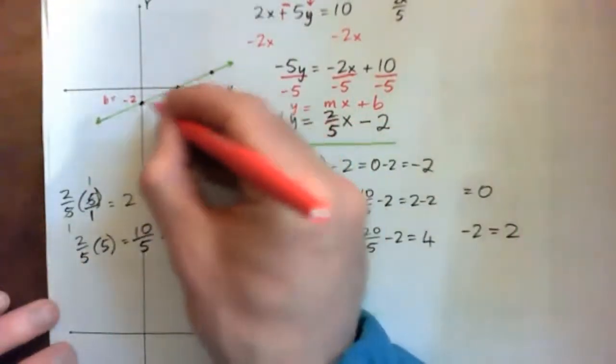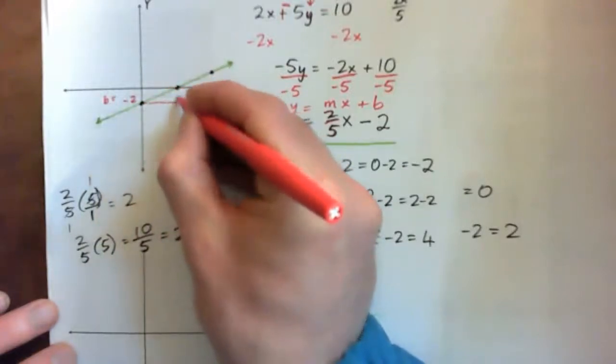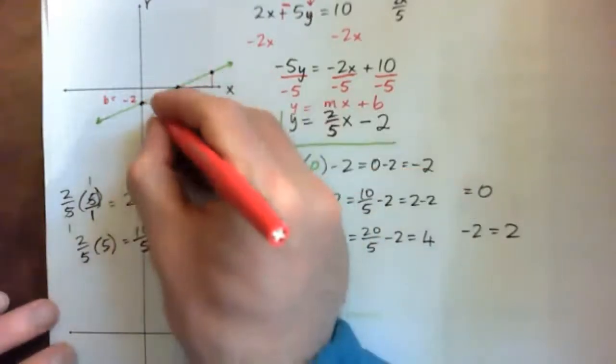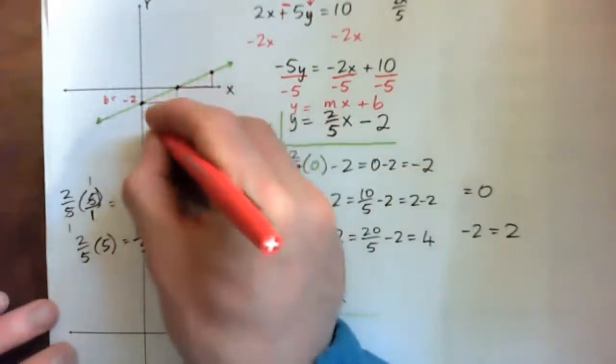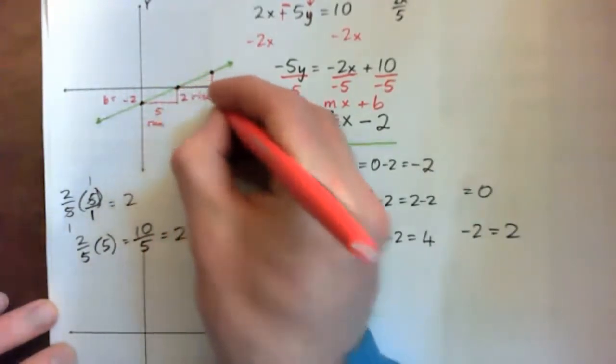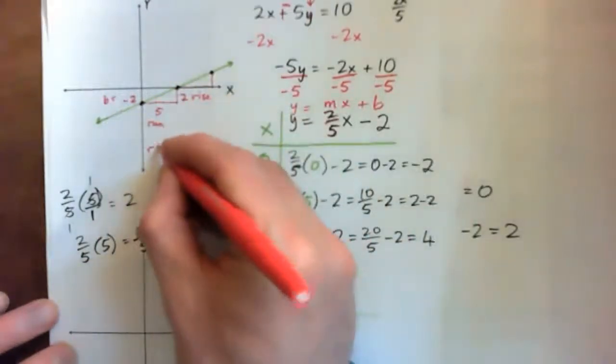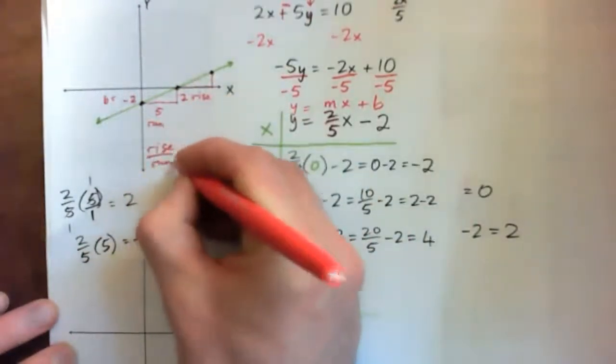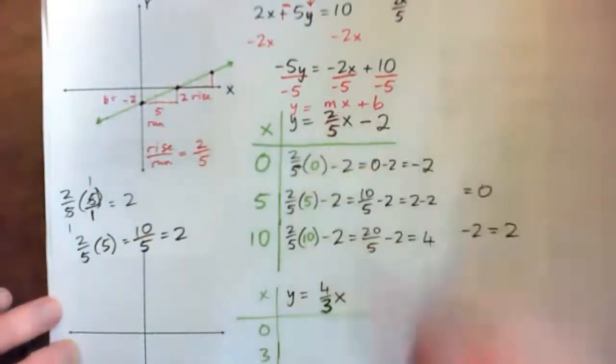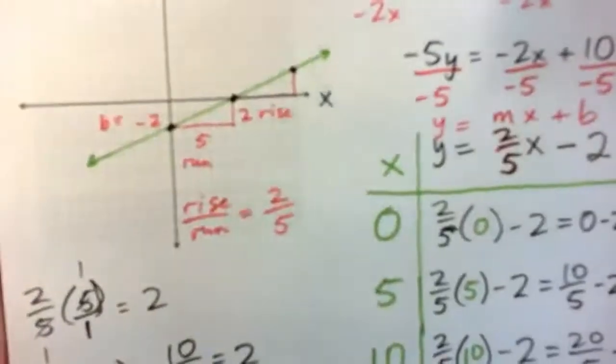So, the rise over the run should be 2 over 5. And if I take two points, like this point and this point, I'm going over this distance and up here. Over this distance and up here. So, I'm going across 5, and that's the run. And then I'm going up 2, that's the rise. So, the rise over run, the slope equals 2 over 5. The slope is 2 over 5. Okay with that. Yes. All right. There we go.